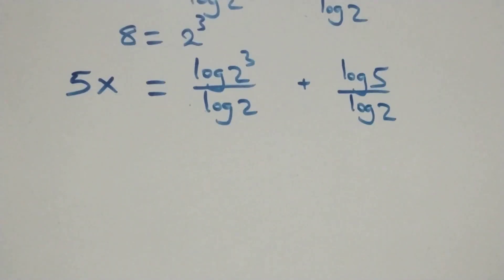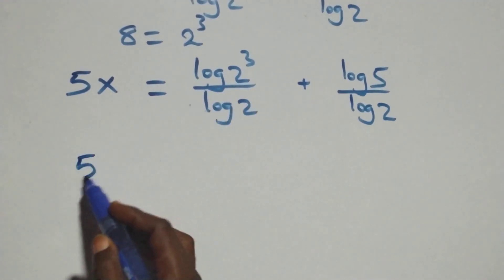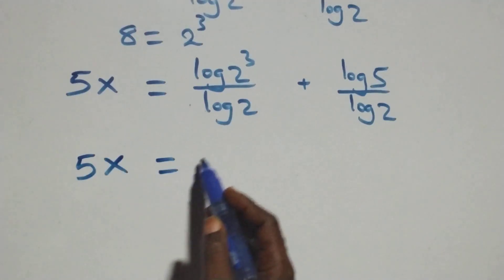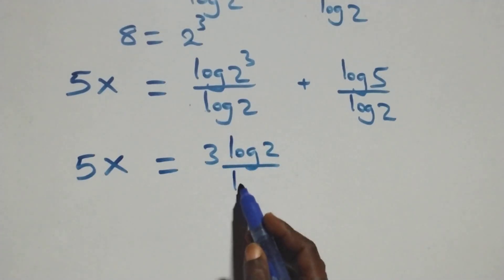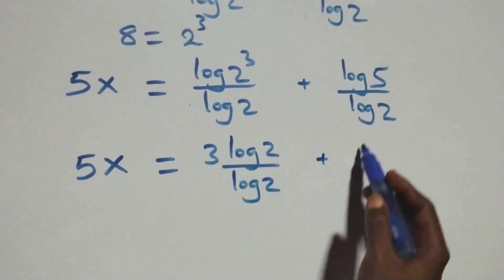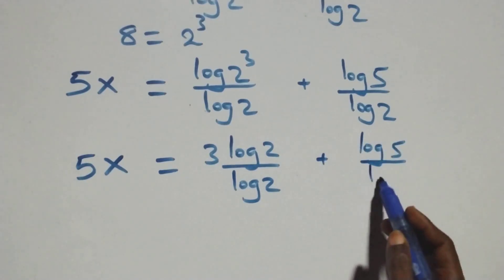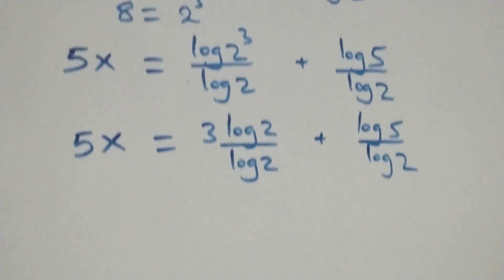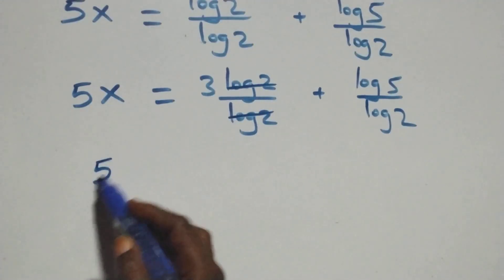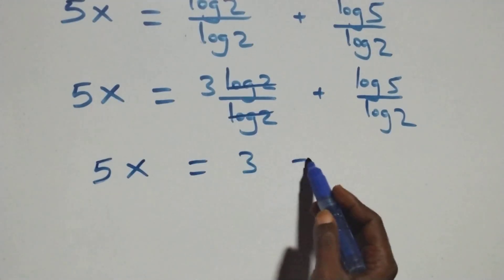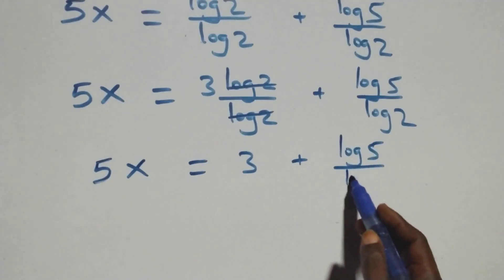From here we apply the power rule of logarithm — the 3 comes down — and we have 5x equals 3·log 2 over log 2, plus log 5 over log 2. Then log 2 cancels, and we have 5x equals 3 plus log 5 over log 2.